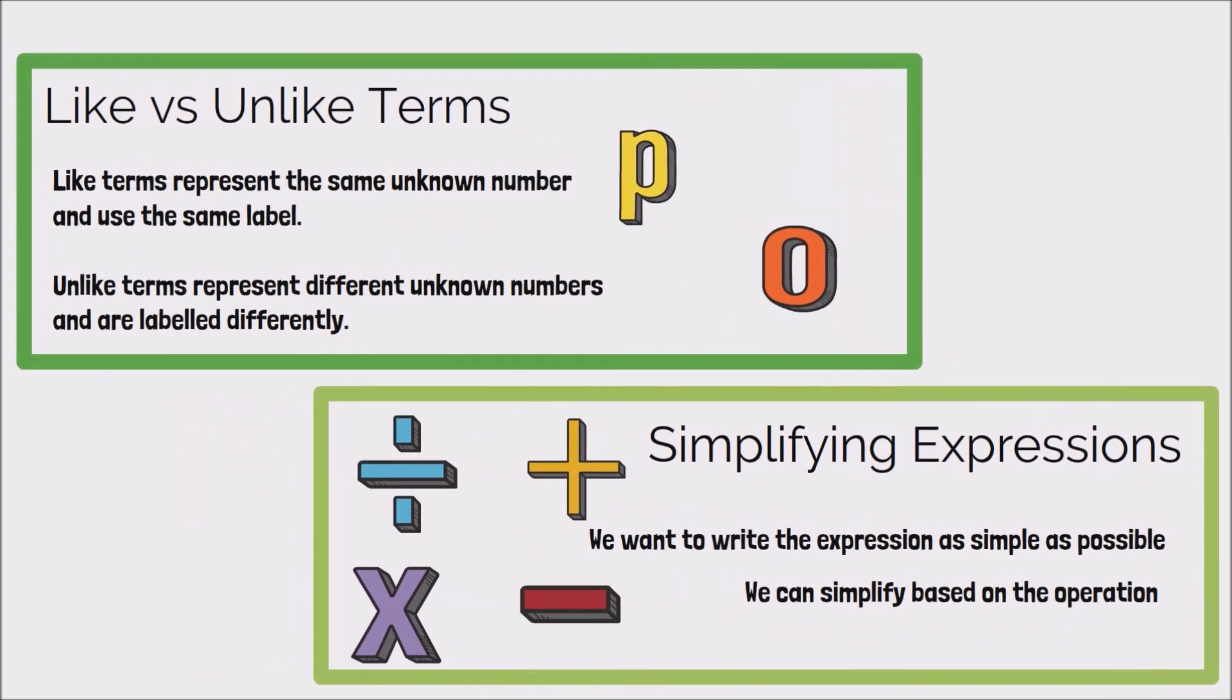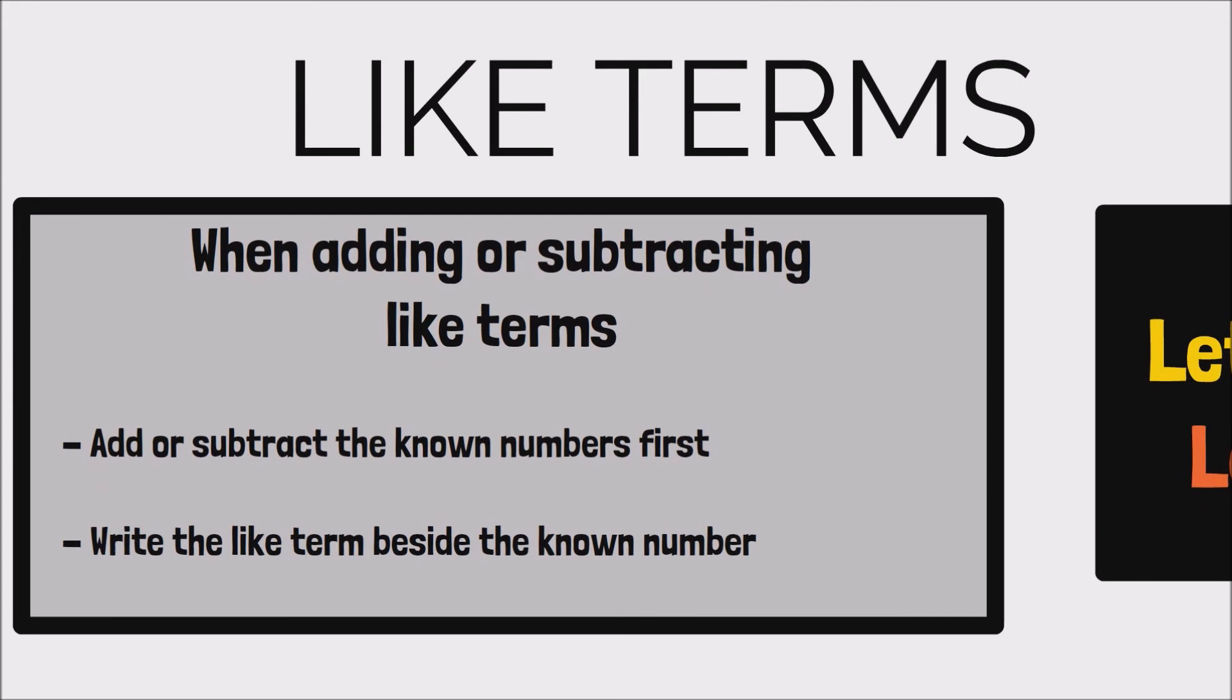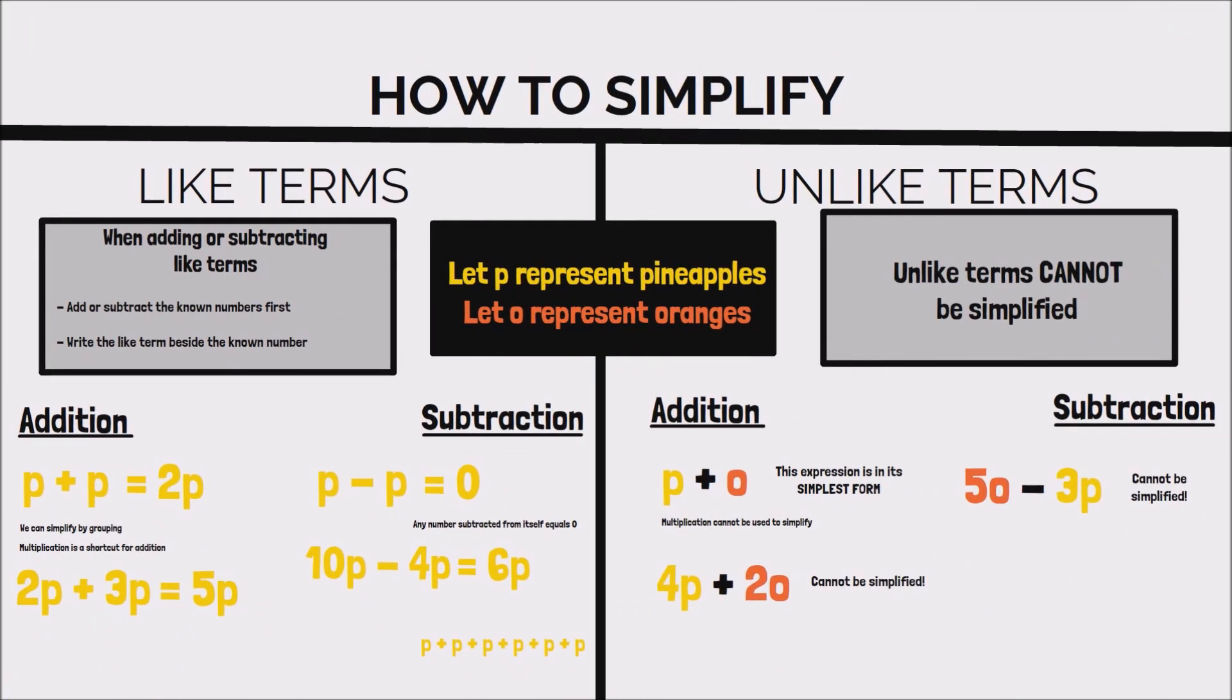Algebraic expressions should always be written in their simplest form by using the idea of like and unlike terms. For like terms, when adding or subtracting, we can simplify by adding or subtracting the known numbers first and then writing the like term beside it for the final result. For unlike terms, however, they cannot be further simplified through adding or subtracting. And that's it for today's lesson.